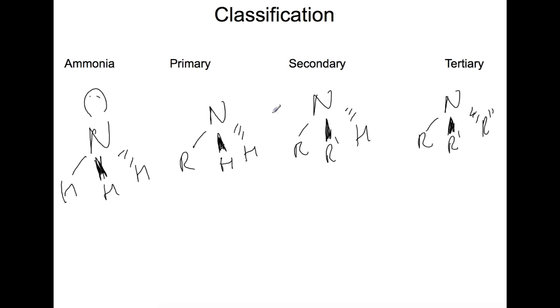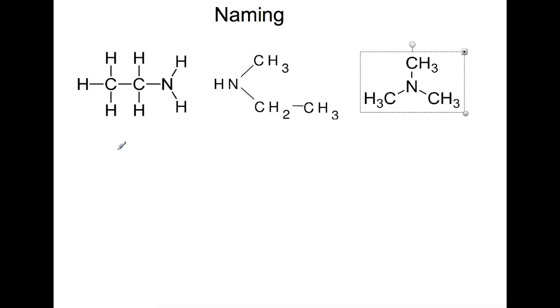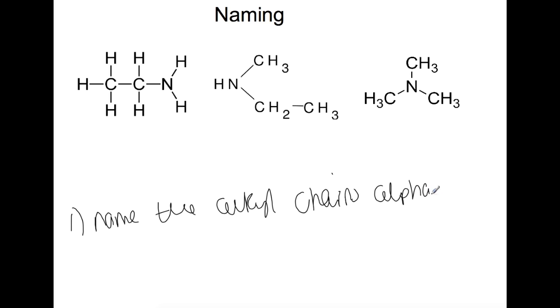We will look at the properties of the primary, secondary, and tertiary amines later. First of all, we're going to look at naming. When we are naming amines, you need to name the alkyl chains alphabetically and then put the word amine on the end.